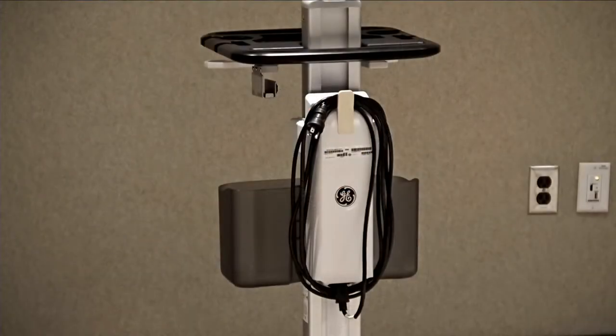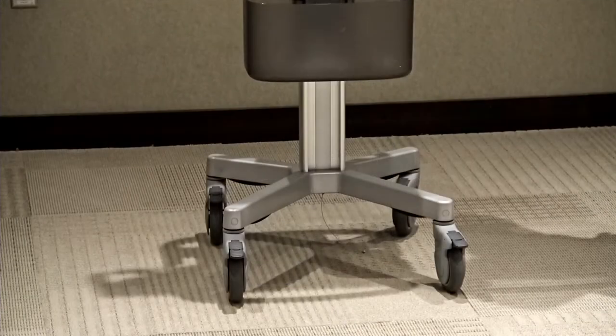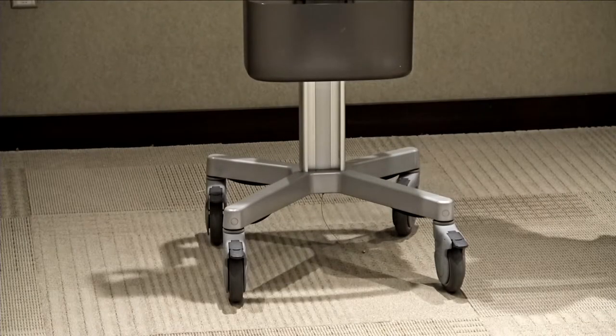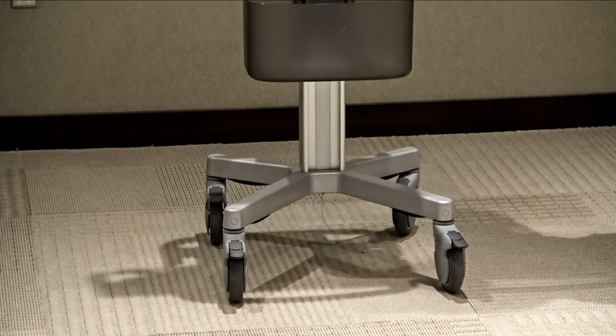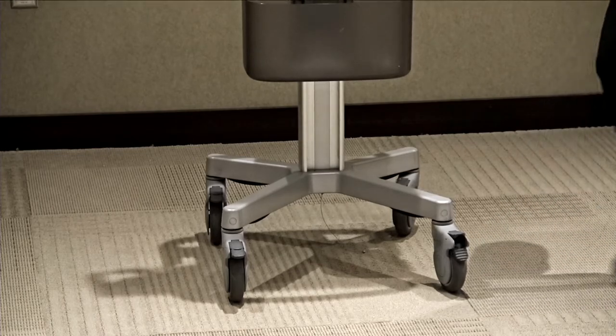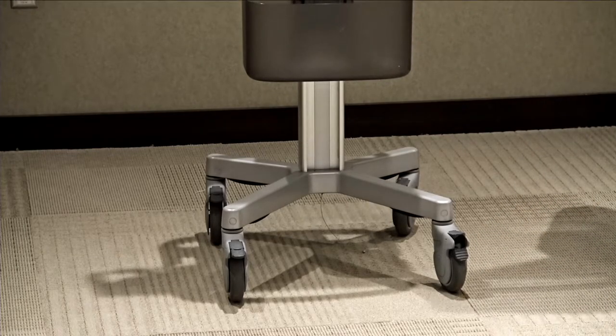The Venue Go comes with a power cord management solution for easy storage. The Venue Go cart has a brake on each wheel. To activate the brake, press down on the front gray lever. To release, press the top gray lever.